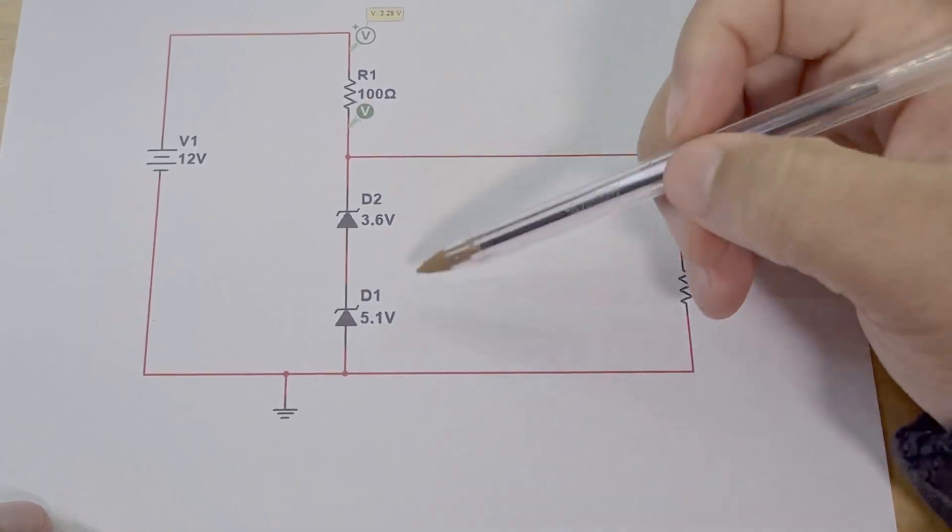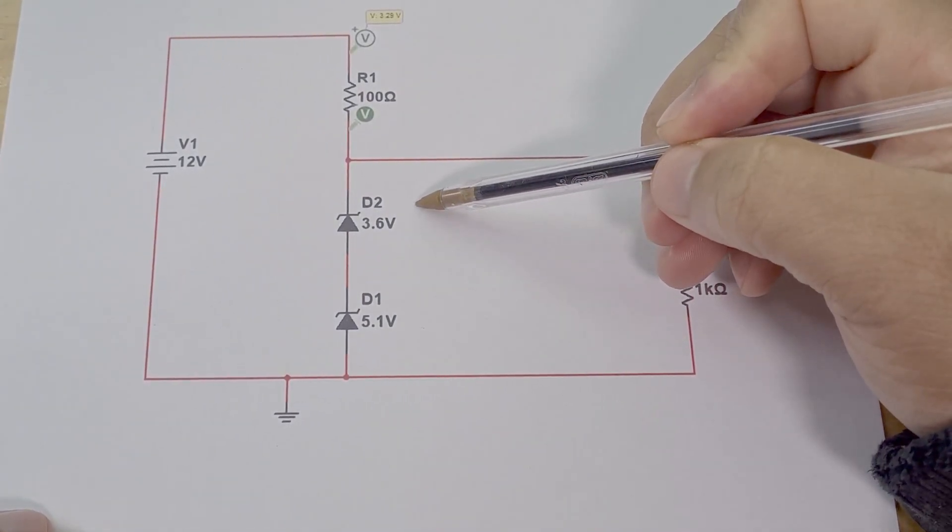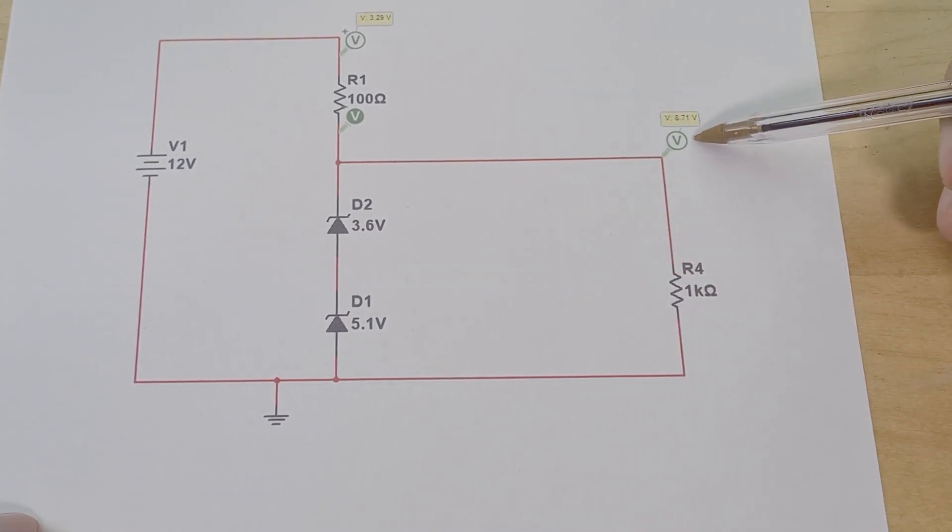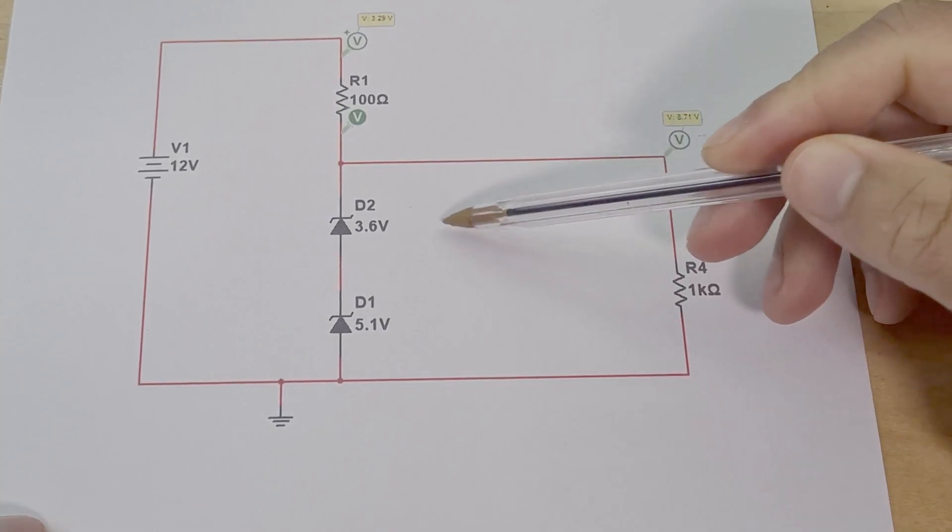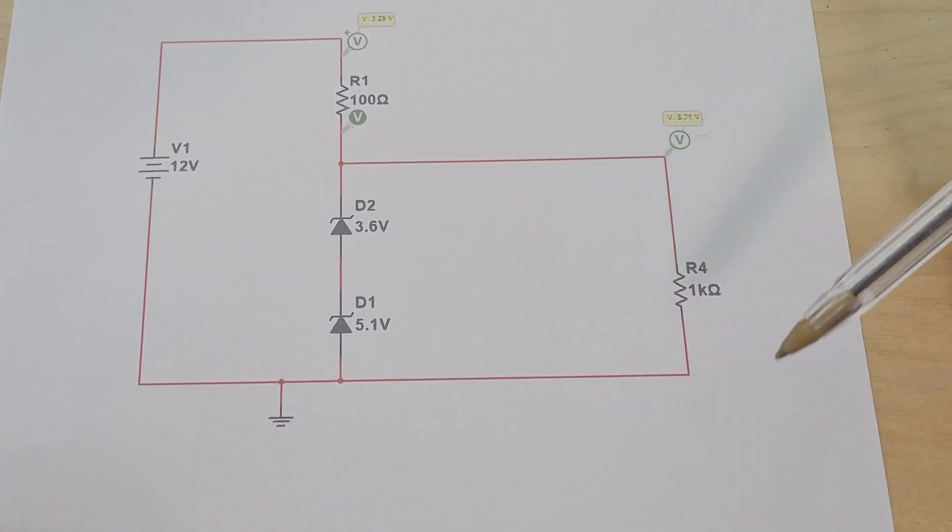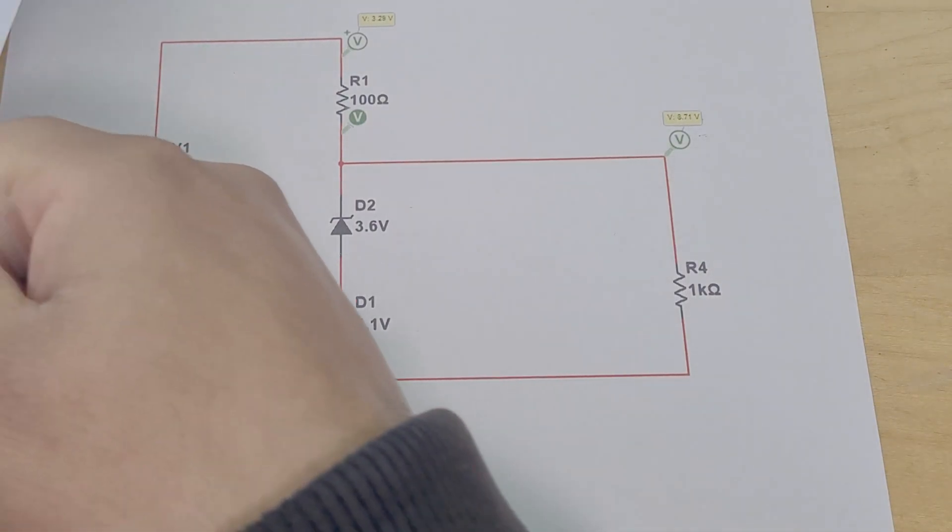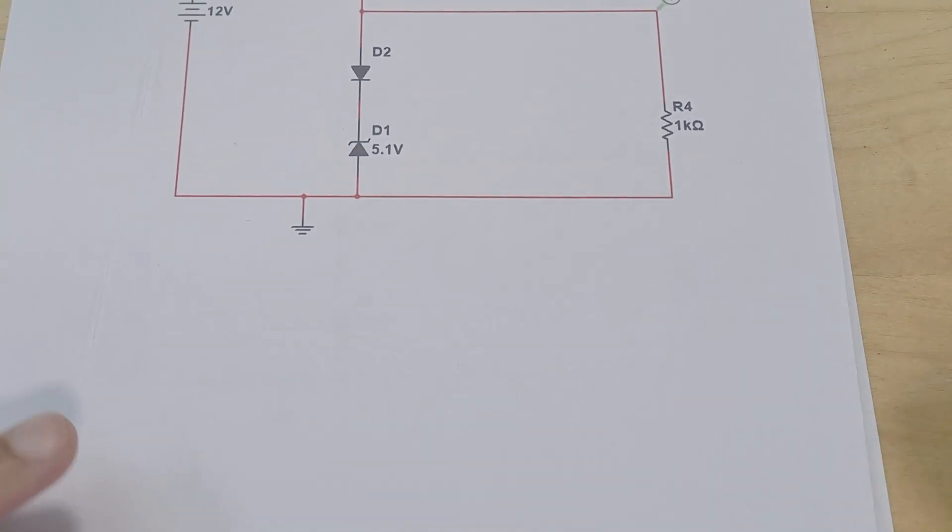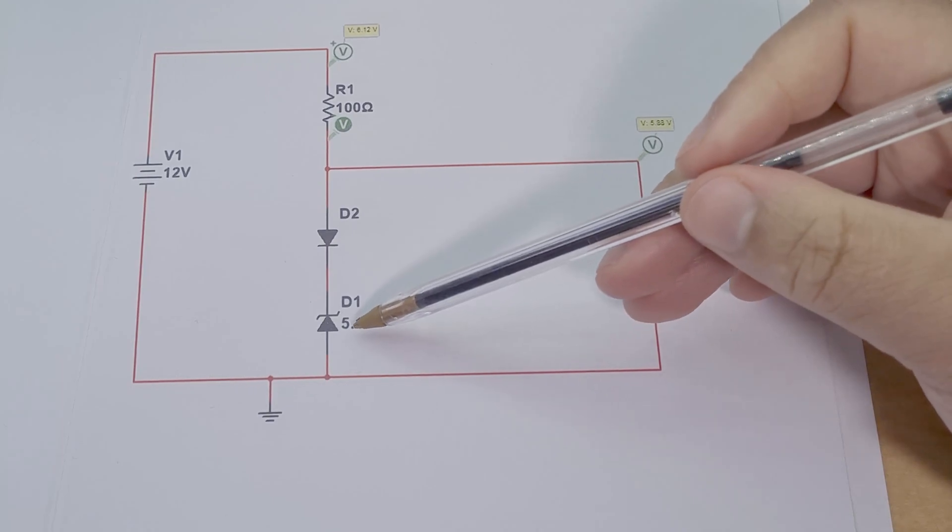So here you can see I've got a 5.1 volt plus a 3.6 volts. So then that creates an 8.7 volt output. So this allows you to customize and use Zener diodes together to create a customized voltage. So it's actually quite cool to be honest with you. I didn't even, I don't know why that didn't even occur to me.